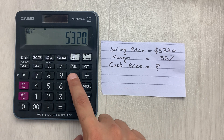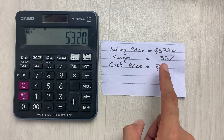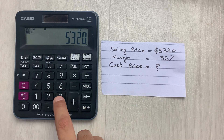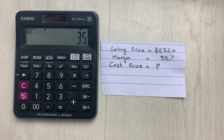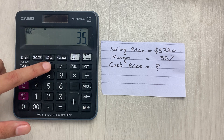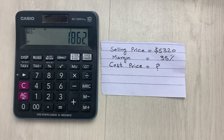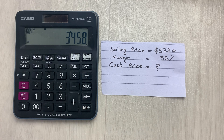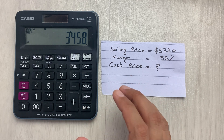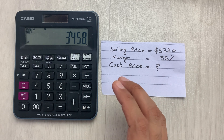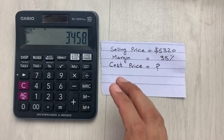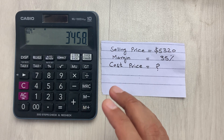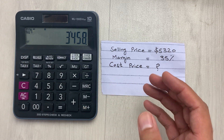Then we have to multiply it with 35, so I will type here 35. And then we have to press this percentage button, so I will press this percentage button. And then in the last step we have to press this minus button.